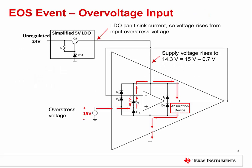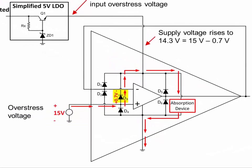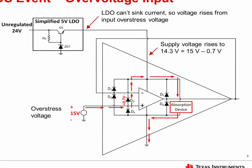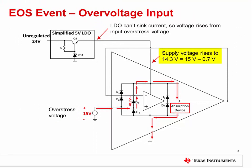Let's look at an example of an EOS event on an op amp. The example op amp circuit is in a 5 volt single supply configuration. Power is supplied by a 5 volt low dropout regulator, or LDO. The maximum power supply voltage for this circuit is 5 volts, but the input of the circuit is connected to a 15 volt overstress voltage. This EOS voltage causes diode D3 to turn on and direct the current to the power supply pin and the absorption device, causing the power supply voltage to rise to 14.7 volts, because the LDO cannot sink current and can therefore no longer regulate its output voltage.